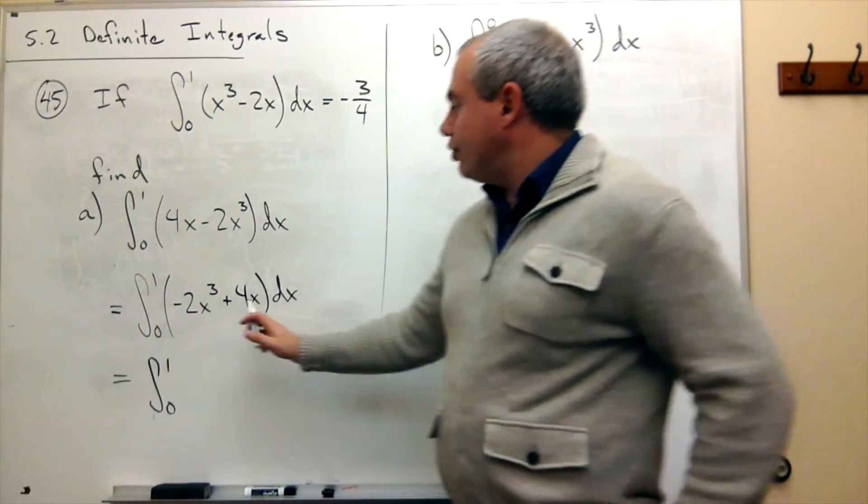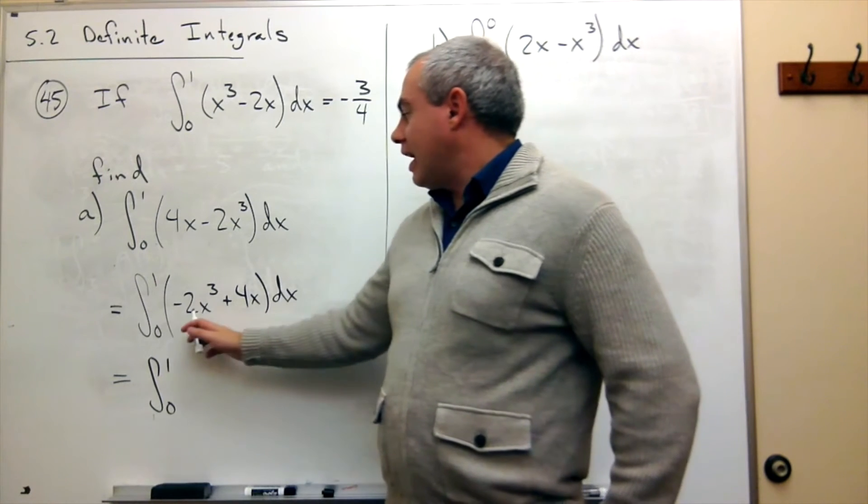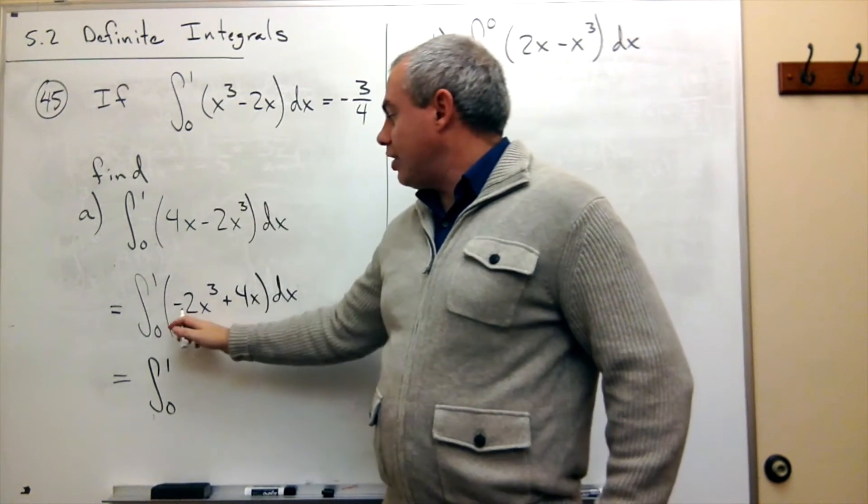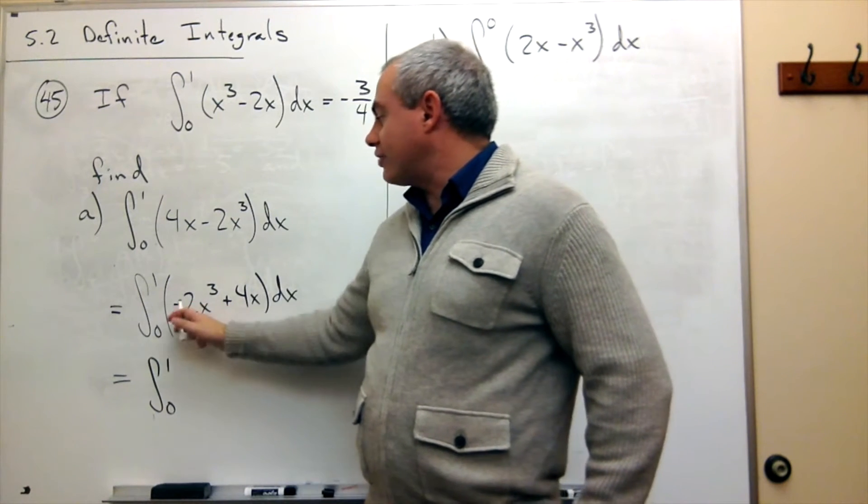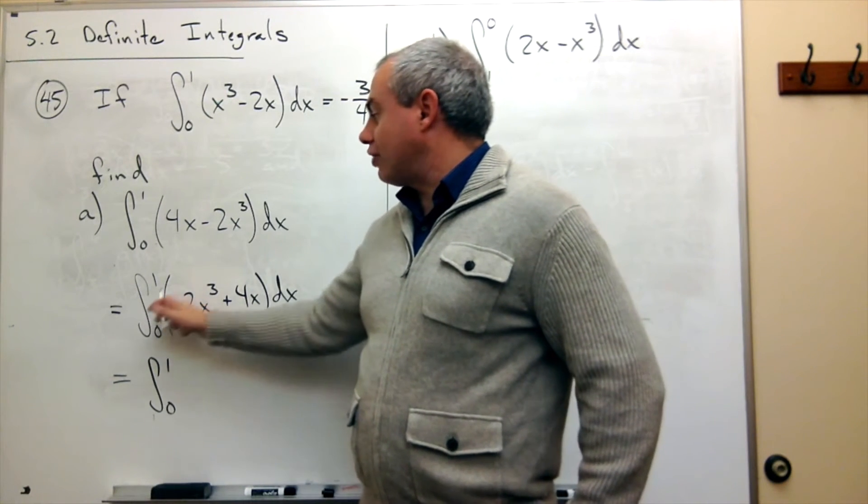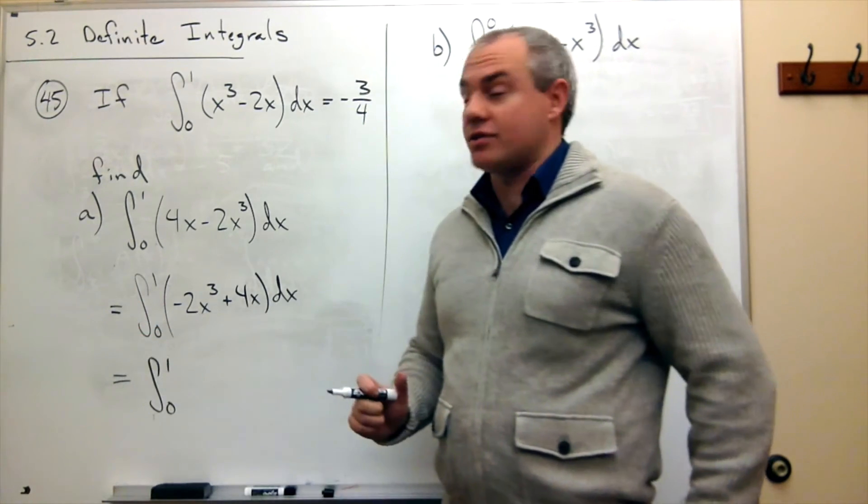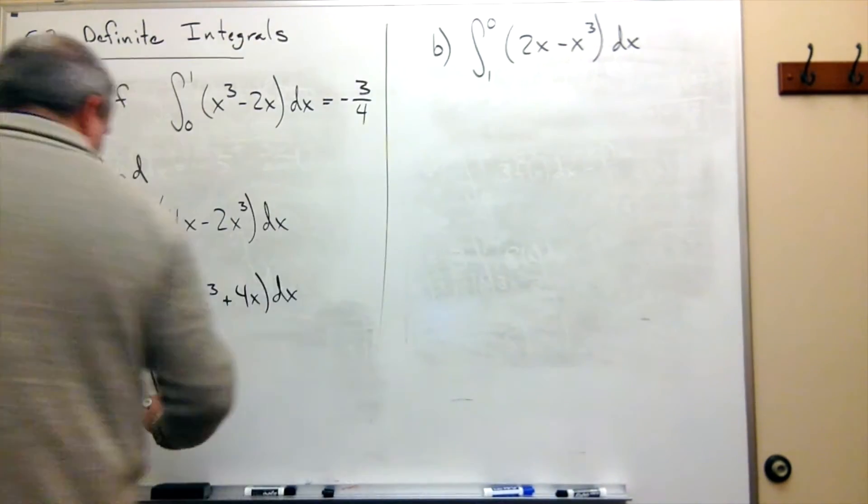Which I could rewrite. This is integral from 0 to 1 of, now I could factor out a negative 2, because up here I just have an x cubed. Here I have a negative 2x cubed. So if I factor out the negative 2, I could factor it out of the parenthesis, and then I could factor it all the way out of the integral sign. So I'm going to factor out a negative 2.